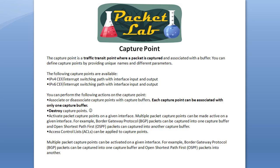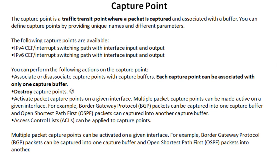Now that you've got your capture buffer configured — the place where you're going to store the packets — you have to specify the point where you're going to capture them. Most of the time this is just specifying an interface. You can pick what traffic you want to capture: just egress, just ingress, or both directions. You can set up ACLs to filter, which is a really good idea. We're giving an overview here, but on a production device you'll want to get down to the specific packets you need.